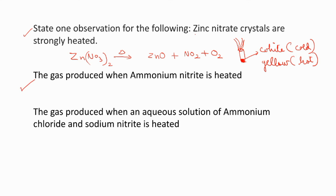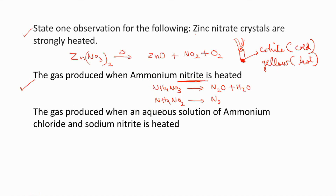Next question: the gas produced when ammonium nitrite is heated. They are not asking about ammonium nitrate (NH₄NO₃) but about ammonium nitrite (NH₄NO₂). The difference between ammonium nitrate and ammonium nitrite is one oxygen less. So instead of nitrous oxide, you will be getting nitrogen gas and a little bit of water. The gas produced is nitrogen.